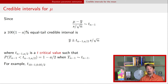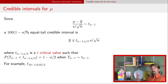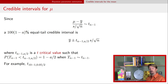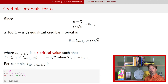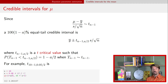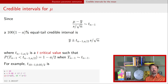For an example of getting the t critical value: if n = 10 and we want a 95% interval so a = 0.05, we compute the t critical value using the qt function in R. We put in 1 − a/2 as the probability and n−1 as the degrees of freedom, and we get the t critical value to use in constructing the credible interval.